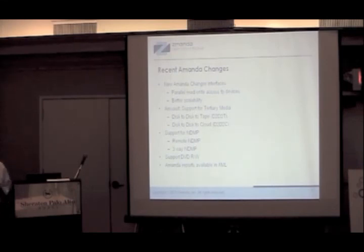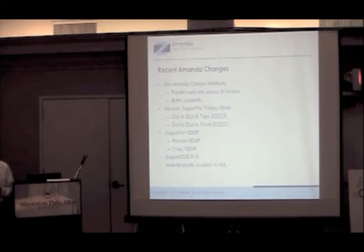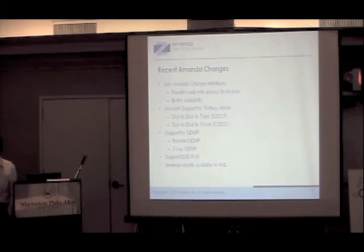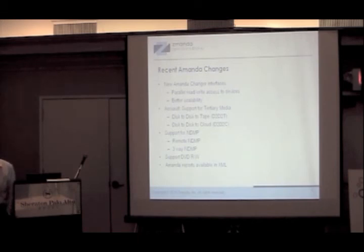Remote NDMP is a case where you are backing up data to tape or media attached to the Amanda server — generally faster compared to file protocols. Three-way NDMP is a configuration where you back up using NDMP protocol from the appliance directly to a tape changer that supports NDMP. Most NAS and storage appliances support NDMP, and all modern tape changers support it as well. Since NDMP version 4, the protocol has been fairly stable, so you can expect devices to work together without version compatibility issues.